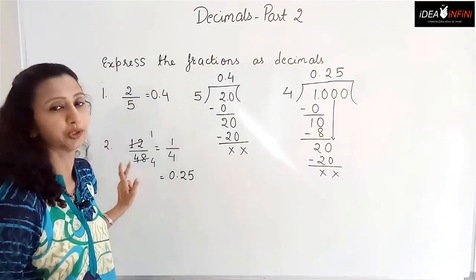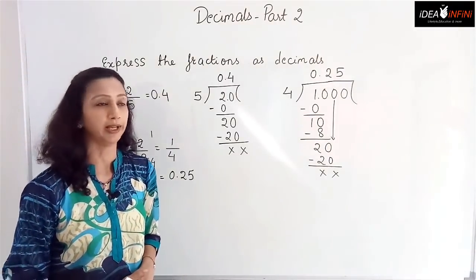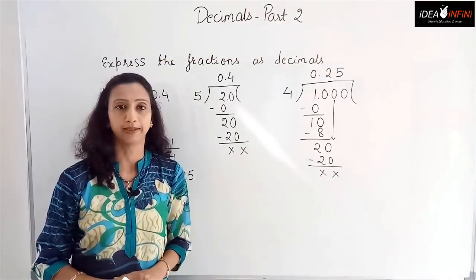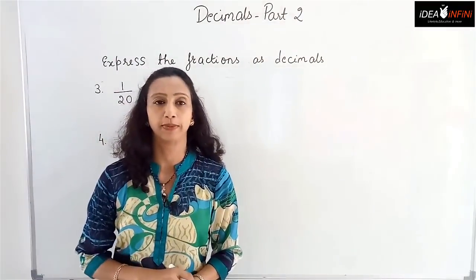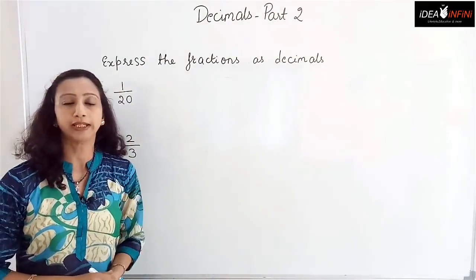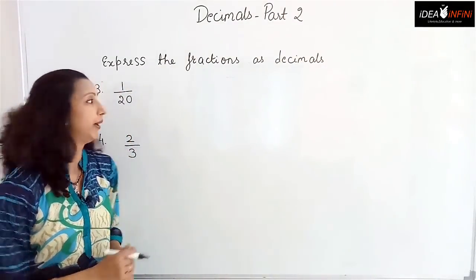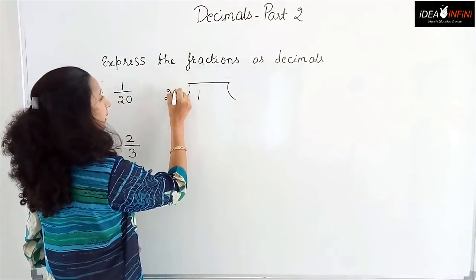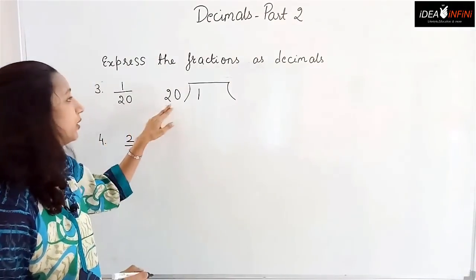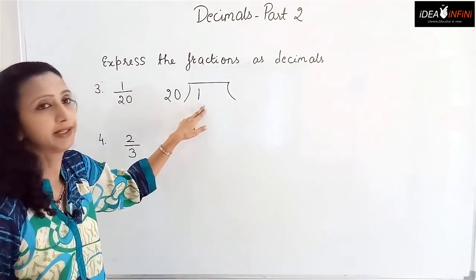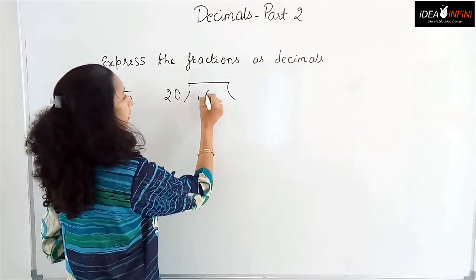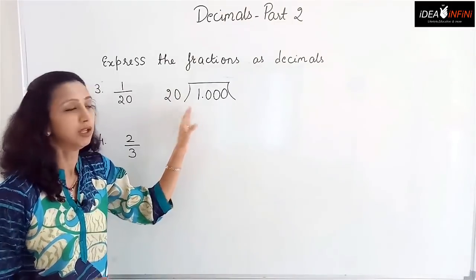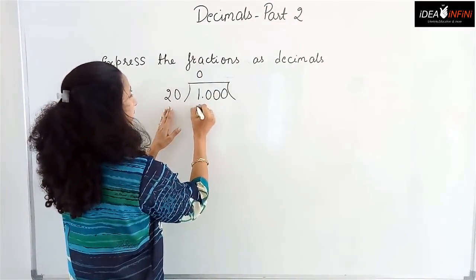So this is how we convert fractions into decimals. Let's see more examples. For 1 by 20: 1 goes inside, 20 outside. 20 is greater than 1, so we get 0 with remainder 1. Place the decimal point and bring down a zero to get 10. 20 is still greater than 10, so again 0 with remainder 10.